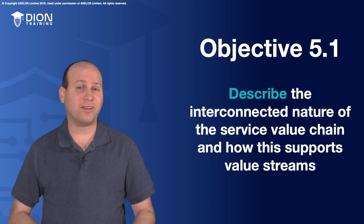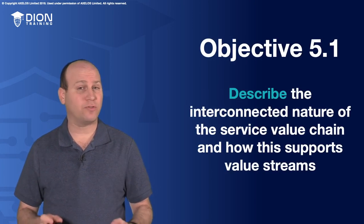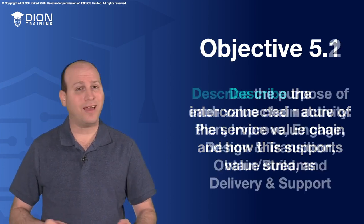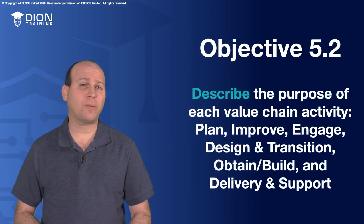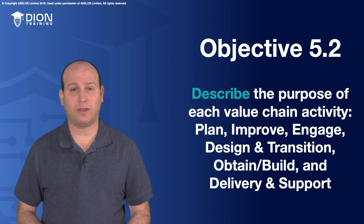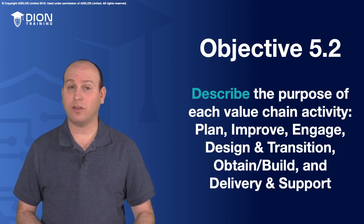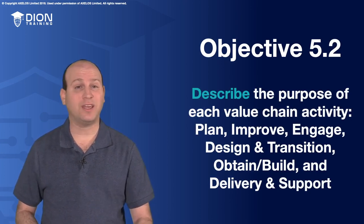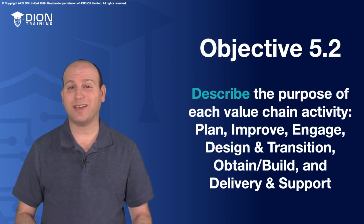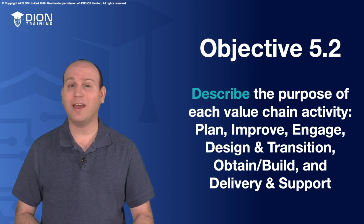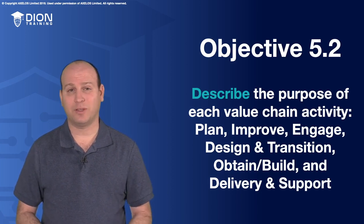The first sub-objective is to describe the interconnected nature of the service value chain and how this supports value streams, and the second is to describe the purpose of each of the value stream activities. That includes plan, improve, engage, design and transition, obtain and build, and delivery and support.